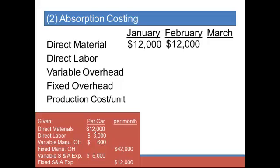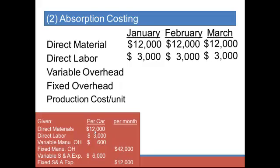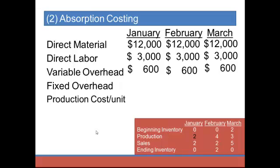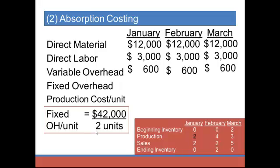Materials cost is $12,000 per car for each of the three months. Labor is $3,000 per car, added for each month. Variable overhead is $600 per car — $600 in January, February, and March. Fixed overhead is $42,000 per month total, so we can't simply add that total to a per-car amount. We have to compute fixed overhead per unit. In January, we produced two cars, so fixed overhead per unit is $42,000 divided by two units, which equals $21,000 per car.